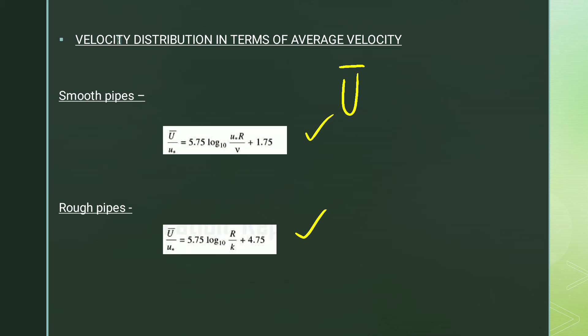For a rough pipe, the roughness is the predominant factor. For a smooth pipe, viscosity is the predominant factor — it is the mu factor. This distinguishes how each pipe type behaves in turbulent flow.